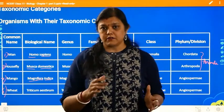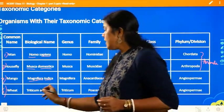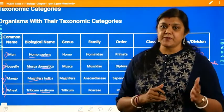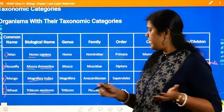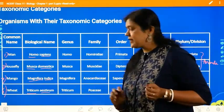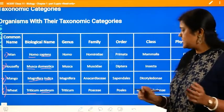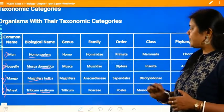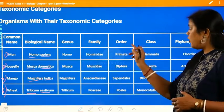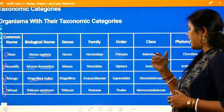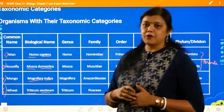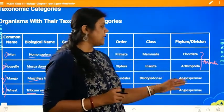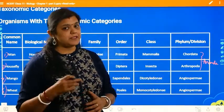The fourth example is wheat. The scientific name of wheat is Triticum aestivum — aestivum being the species name and Triticum the genus. The family is Poaceae, the order is Poales, the class is Monocotyledons, and the phylum is Angiosperm.